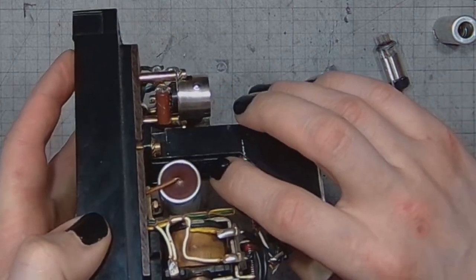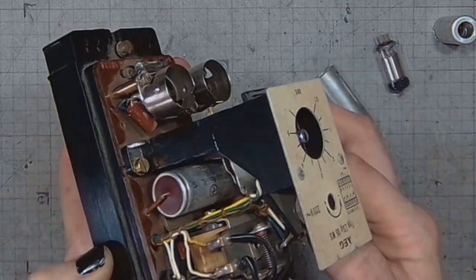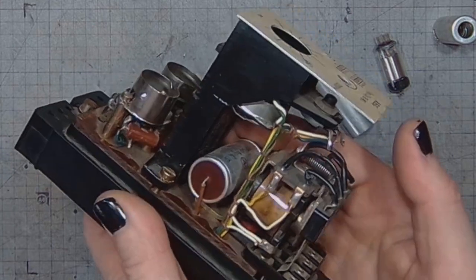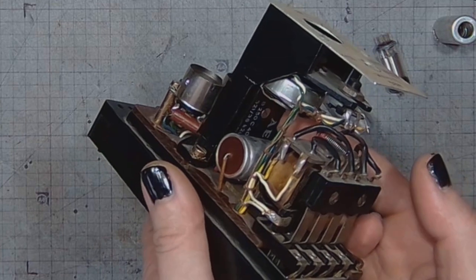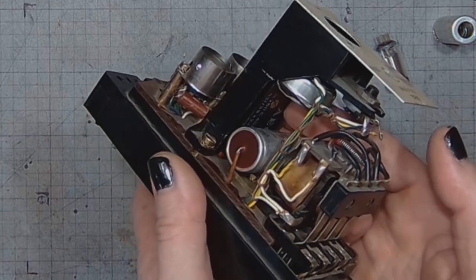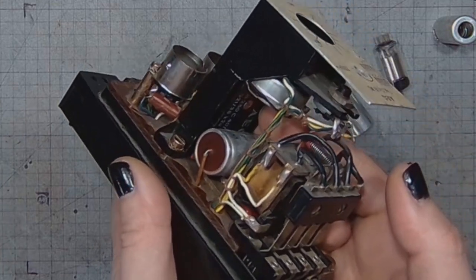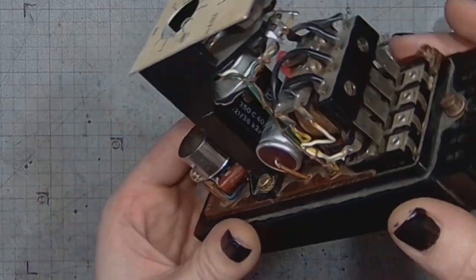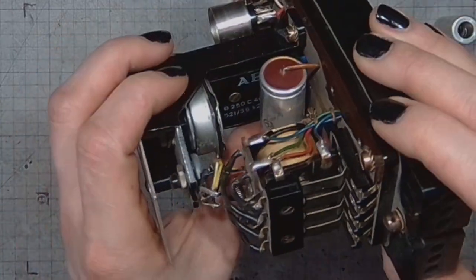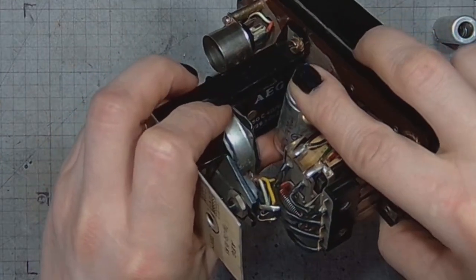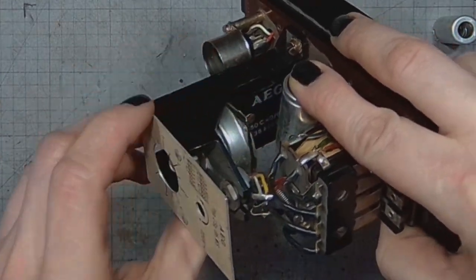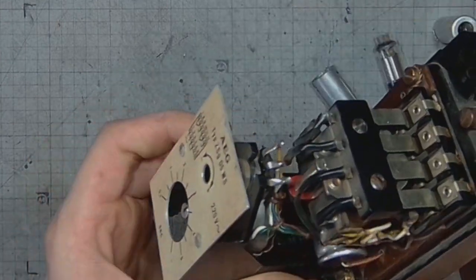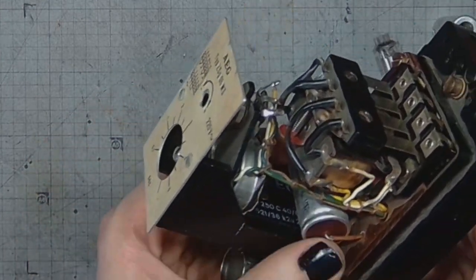We can also see something like a block underneath the potentiometer. It has some markings on it, clearly made by AEG. And this is in fact a selenium full bridge rectifier.